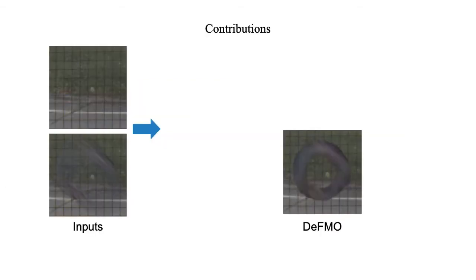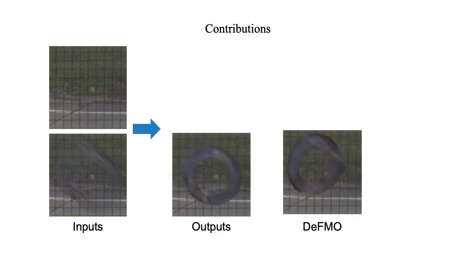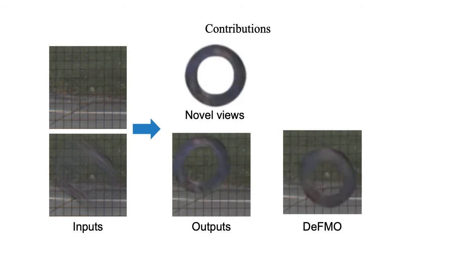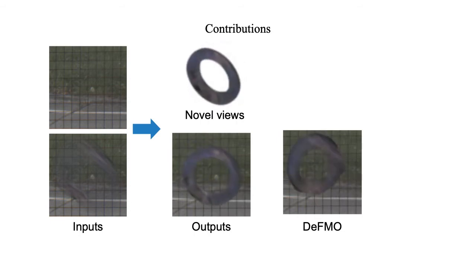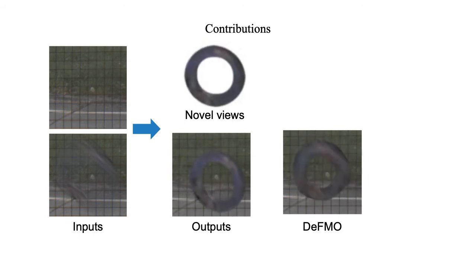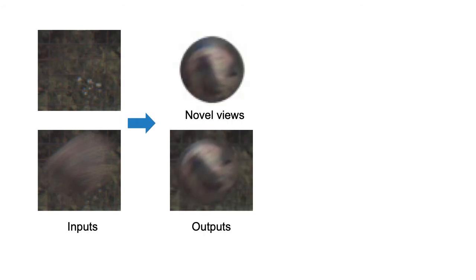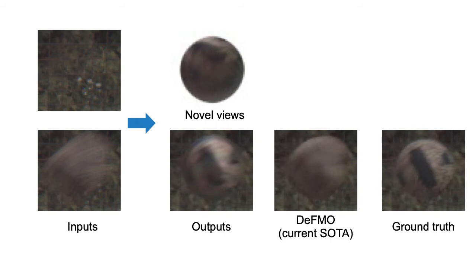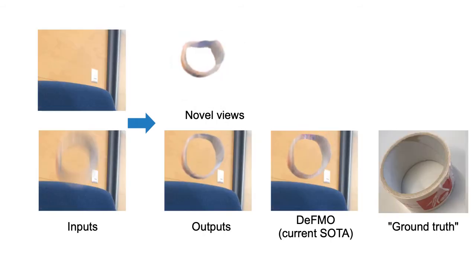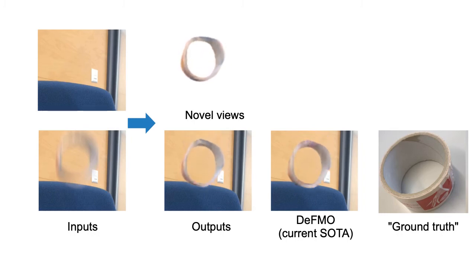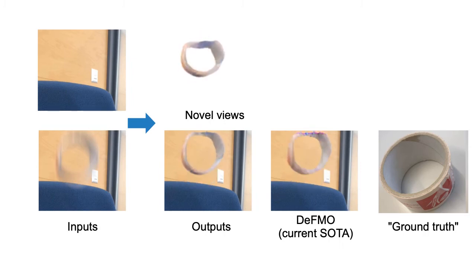All prior methods for fast-moving object deblurring represent the object only in 2D, such as the current state-of-the-art DFMO. The proposed method is the first one to estimate the textured 3D object shape and its motion. Based on these outputs, we can perform various applications, such as temporal super-resolution or novel view synthesis. Now we show evaluation on different real-world datasets.